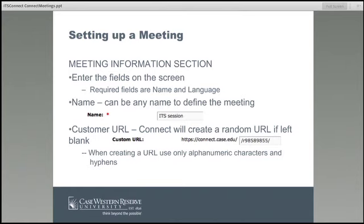The required fields are the name and a language dropdown, which defaults to English but can be changed. In my example I named it "ITS Session." You can also create a custom URL — just make sure it uses only alphanumeric characters and hyphens. There is also a random URL option; it will look like connect.case.edu/R followed by a bunch of numbers, and you can give that out to people as well.